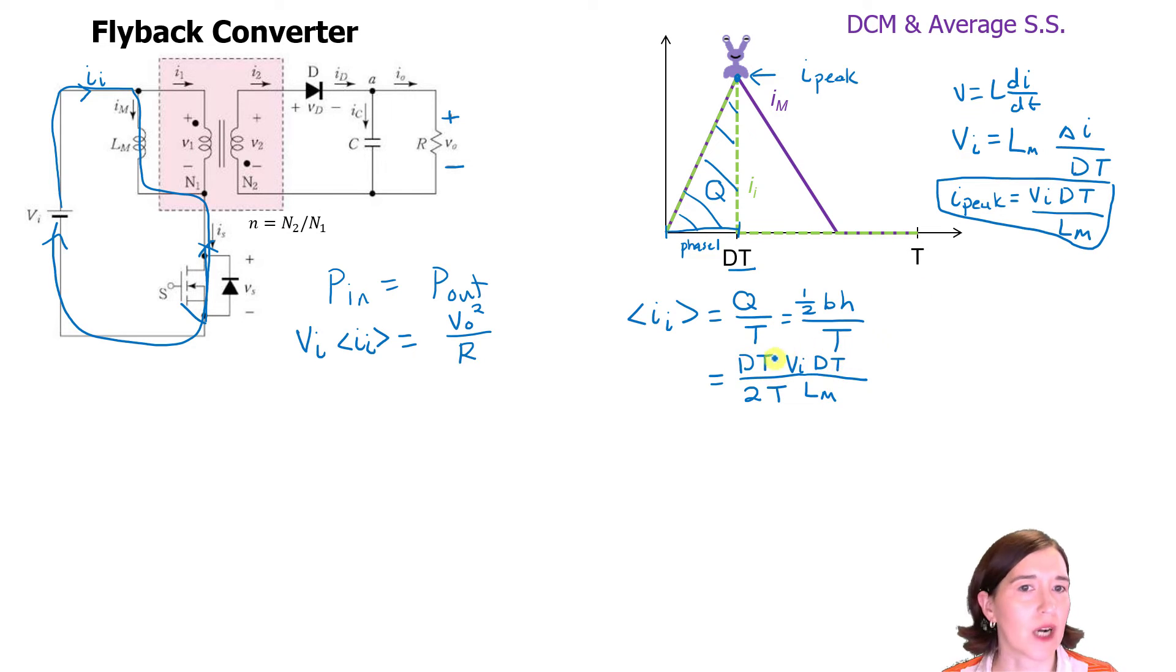Alright, we notice we have some D's and T's that are common here. So let's throw those together. So we have a D squared. Also we have, let's actually get rid of one of these T's first. Get rid of that. So then we have VI. Then we multiply by the D squared T and the 2LM. So this is the average input current here.